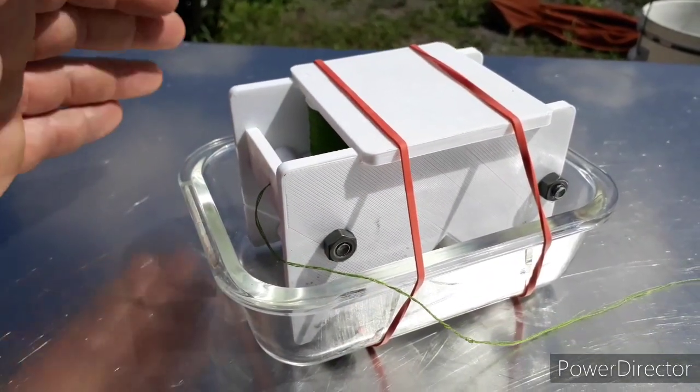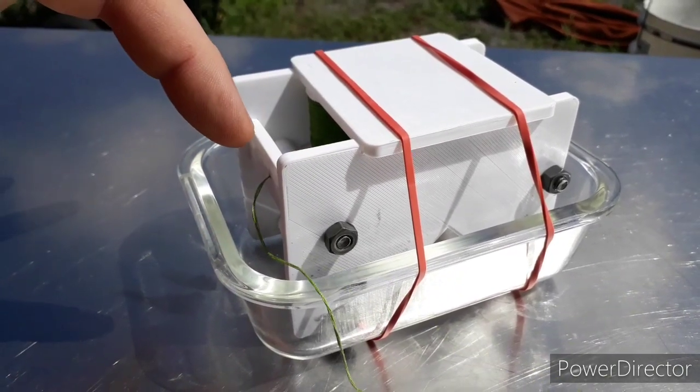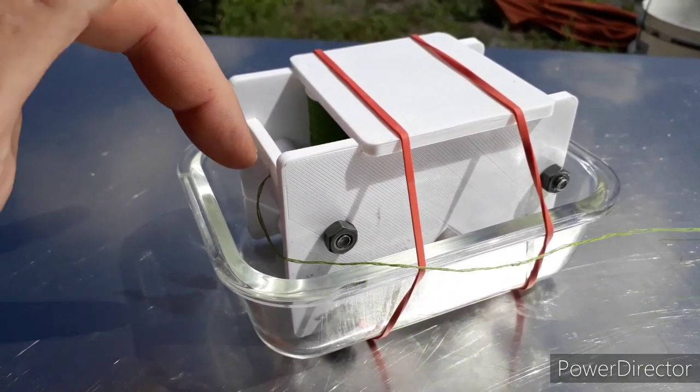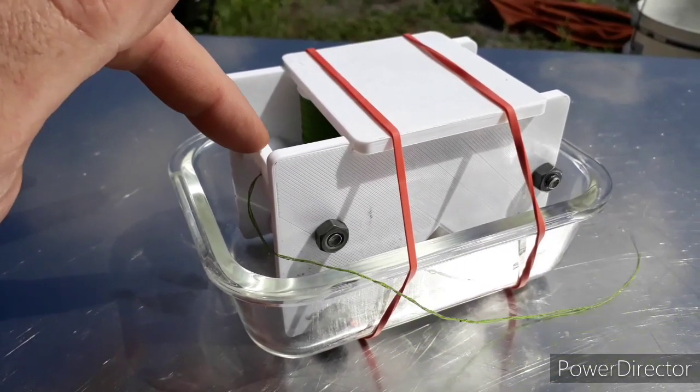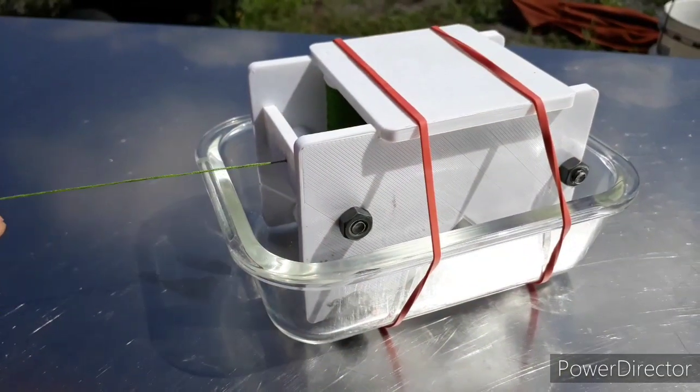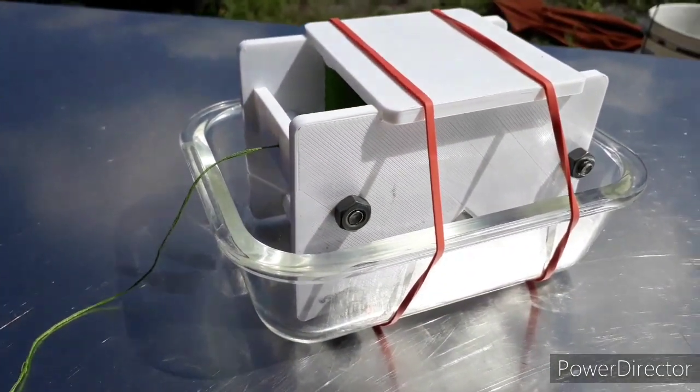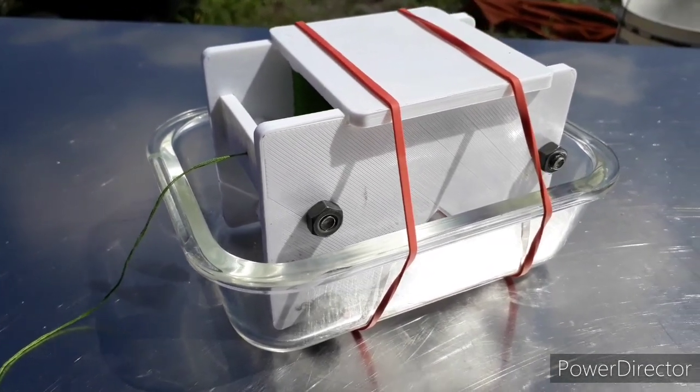It's basically a device that drags all the strings through the goo and then drags it out through the sizing die, which scrapes off the extra. As you draw the strings through, they all get coated in burnable stuff, then you let it dry and you've got a fuse.